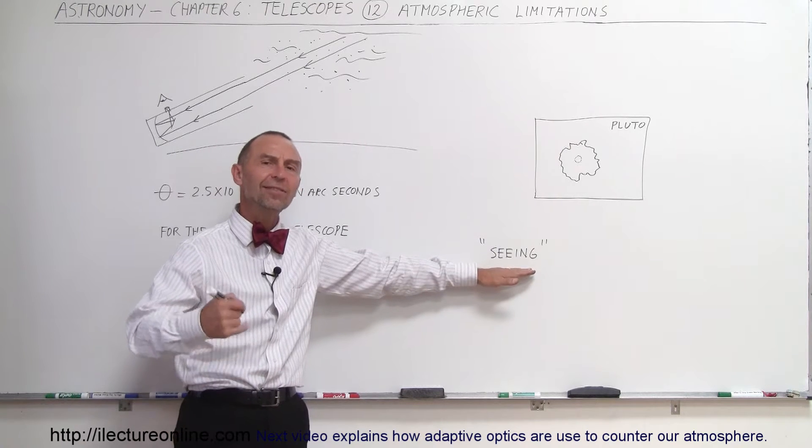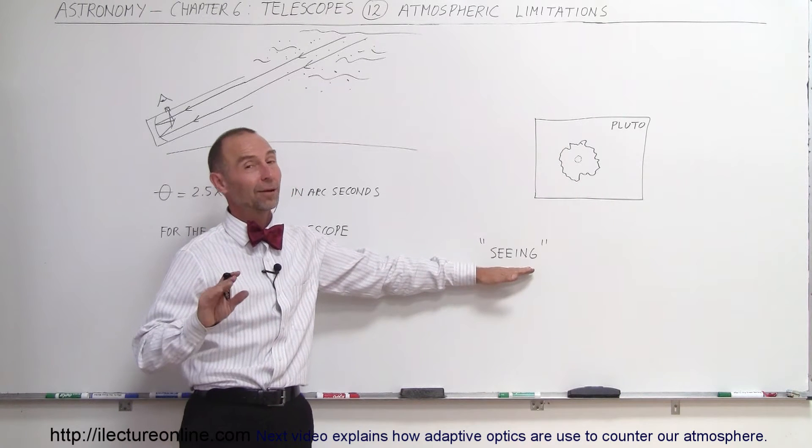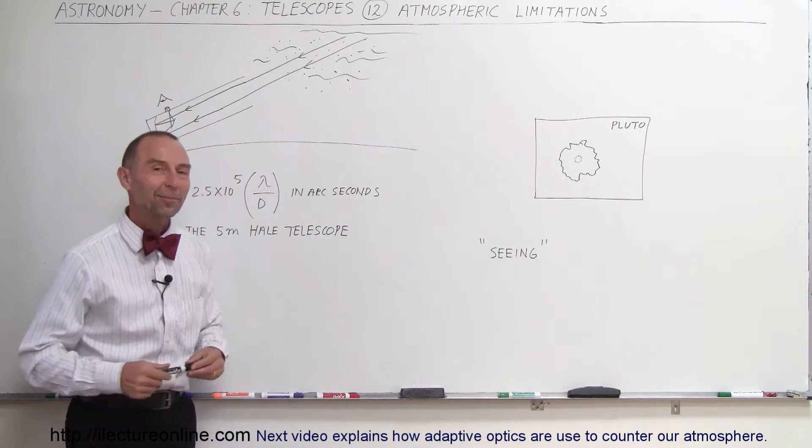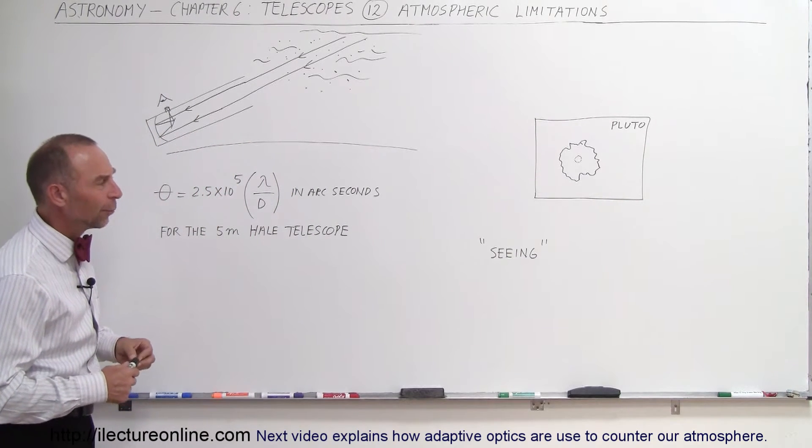Sometimes an astronomer will say the seeing is good today. What does that mean? Or better said, the seeing is good tonight, because of course during the daytime we don't do a lot of observations in astronomy.